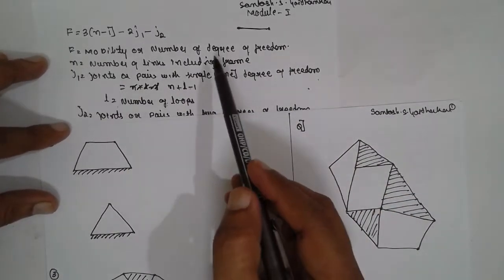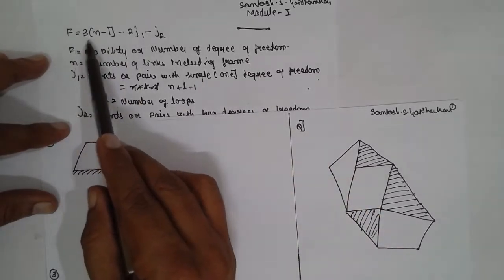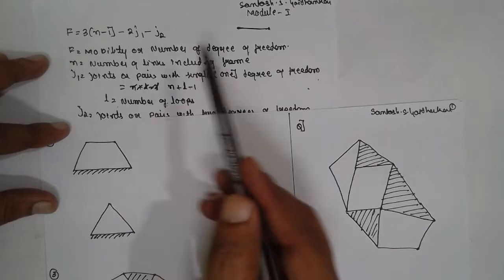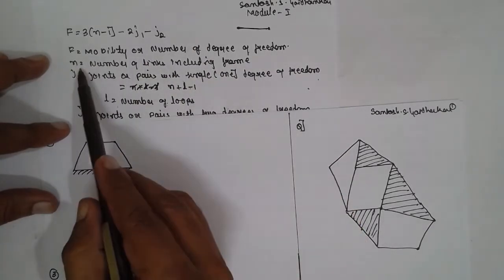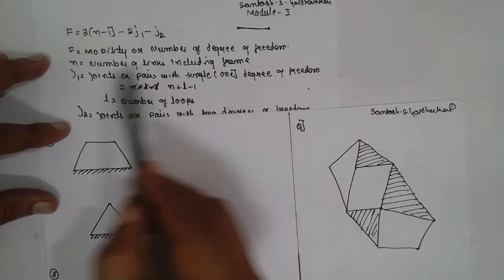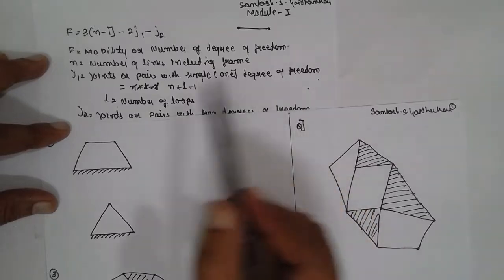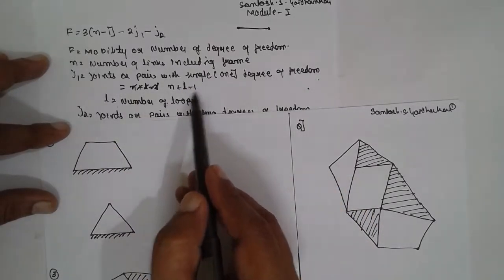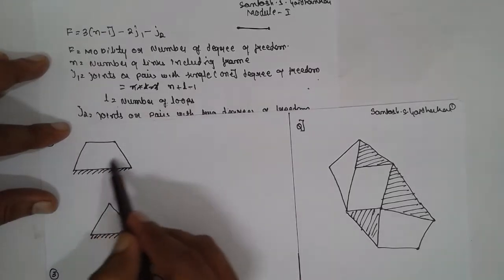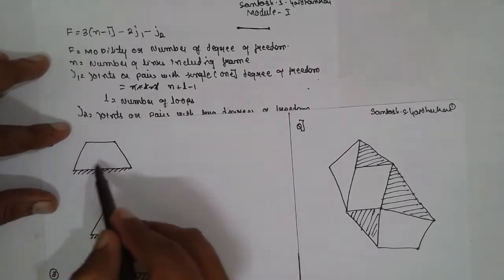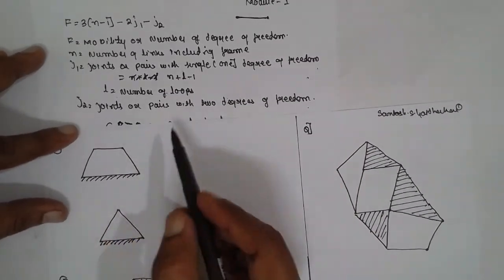I am going to find out the degree of freedom. This is the formula: f is equal to 3 into (n minus 1) minus 2·j1 minus j2. f is the mobility or number of degrees of freedom. n is the number of links including the frame. j1 is the joint or pair with a single degree of freedom. There is a formula for j1: n plus l minus 1, where small l is the number of loops. A loop is a closed empty space.